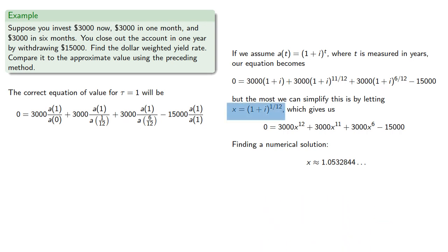Since we made the substitution x equals 1 plus i to the twelfth, then we can solve for i... Which works out to be about 86.44%. Now, in the real world, you'll always have a computing device available that will allow you to find these numerical solutions. But it's also useful to have a way of getting approximate solutions to help you build up what's called a number sense, an intuitive feeling of when an answer is correct or when it's way off and should be investigated.